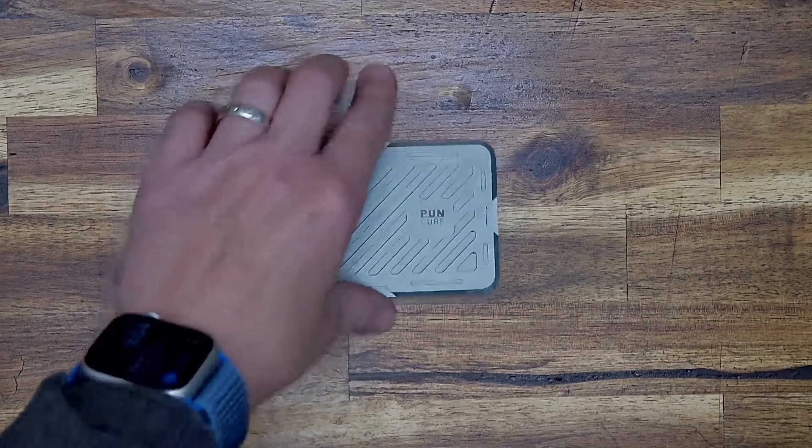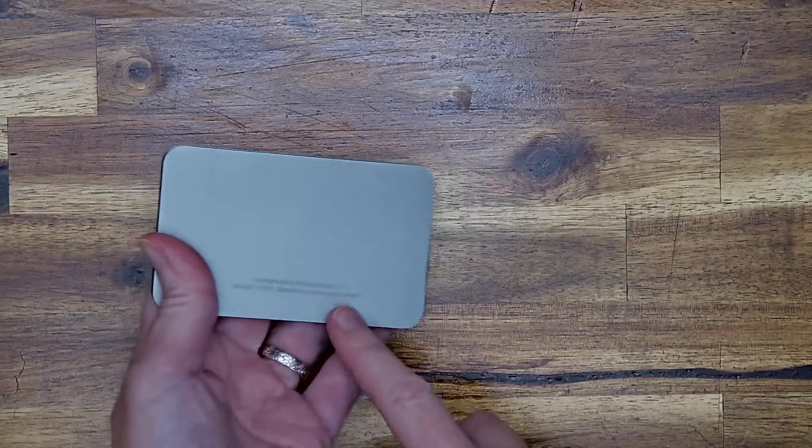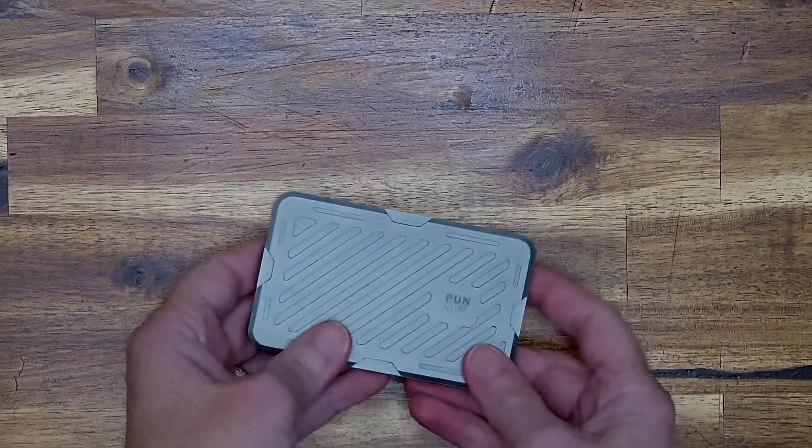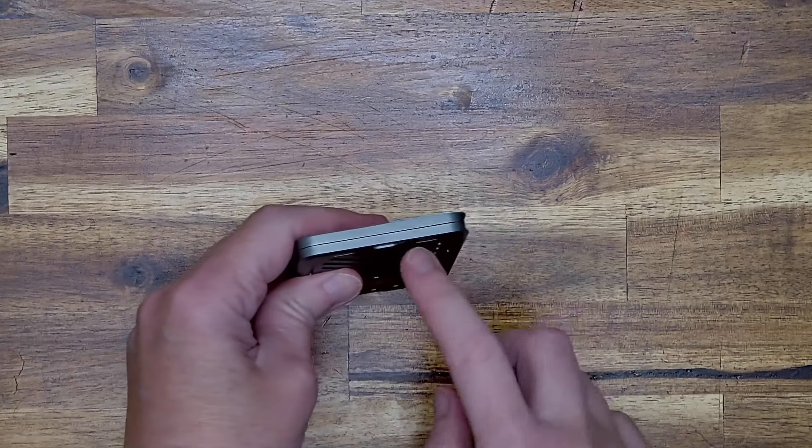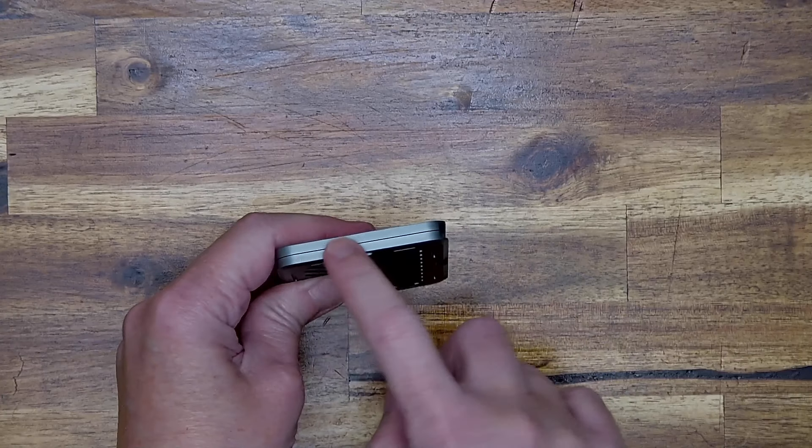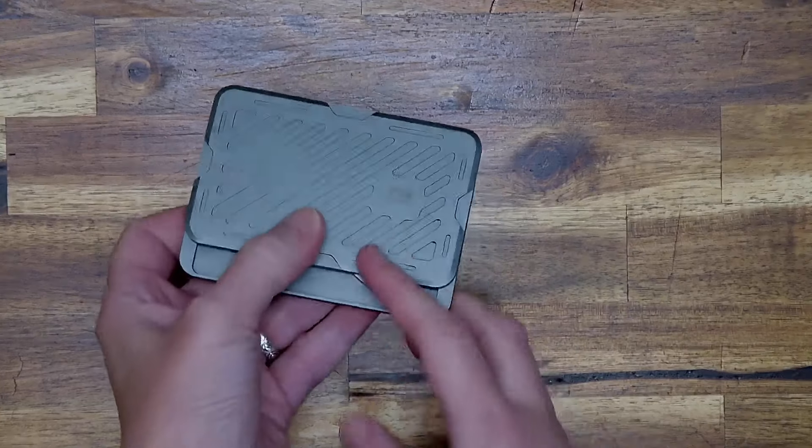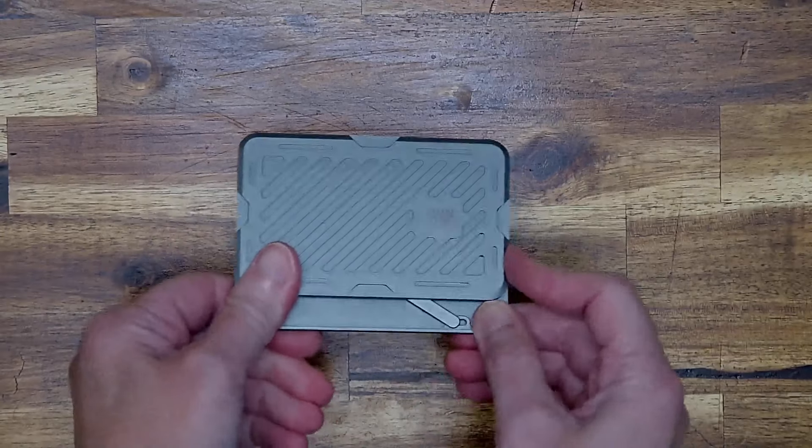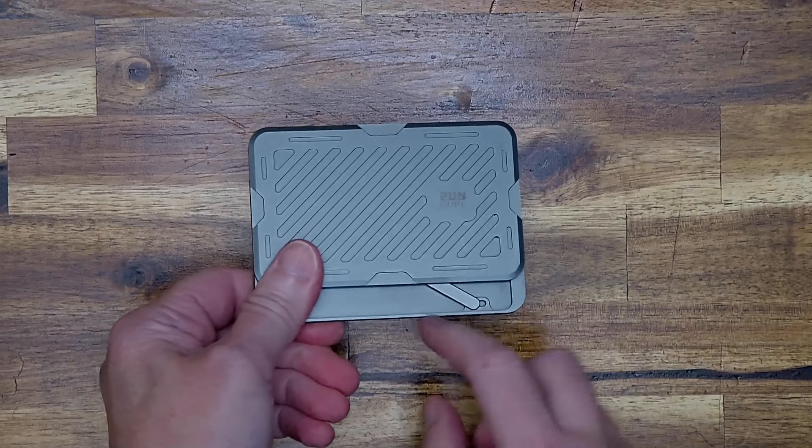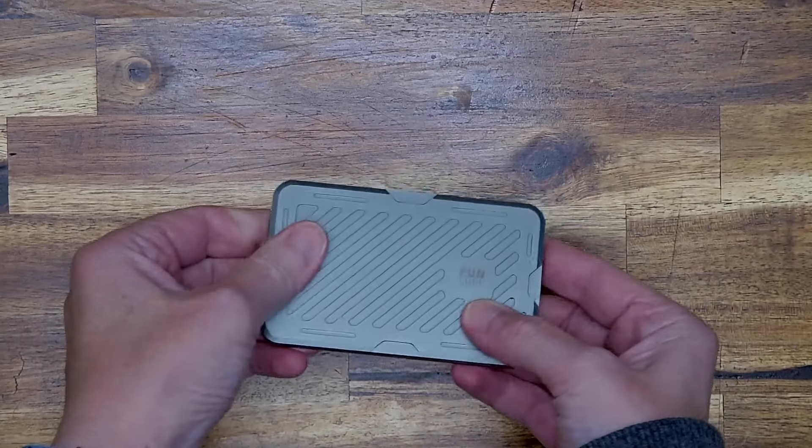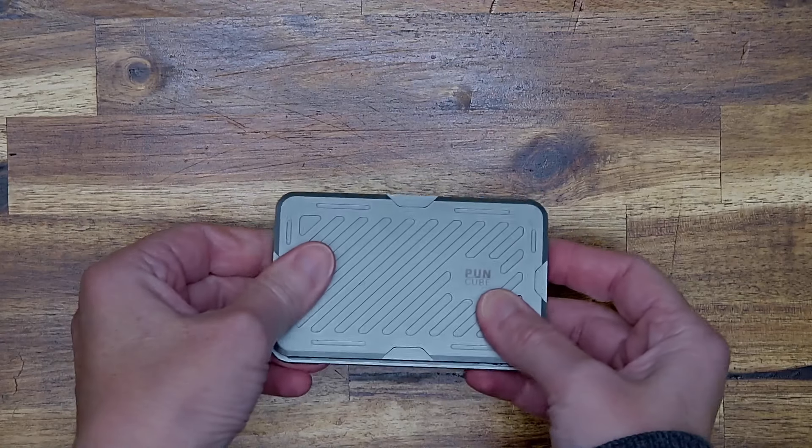This is the Mech Wallet. It's made out of aluminum, which it says on the back here. And what it is, it is a two-piece metal wallet that has an interesting mechanism inside. You can see part of it right here. It's kind of like a ratcheting kind of mechanism.